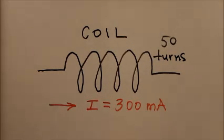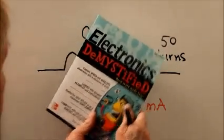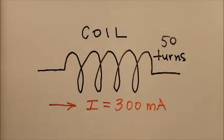Here is an explanation for the answer to final exam question number two in Electronics Demystified, second edition. If you have the printed book, the second edition, you'll find question number two in the final exam on page 416.